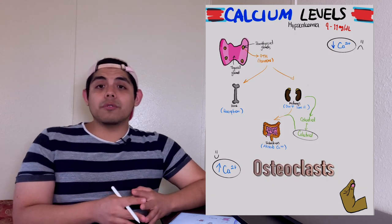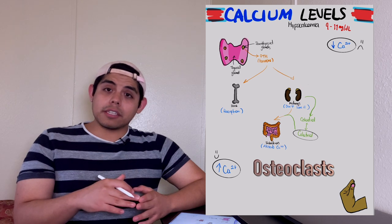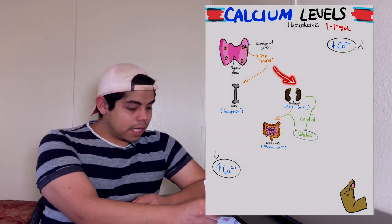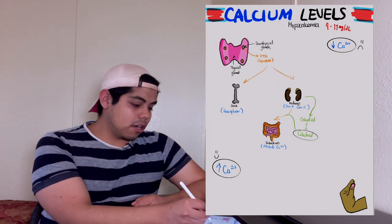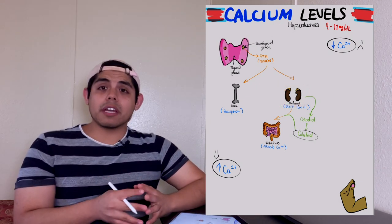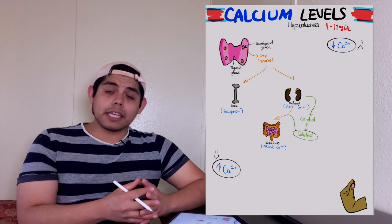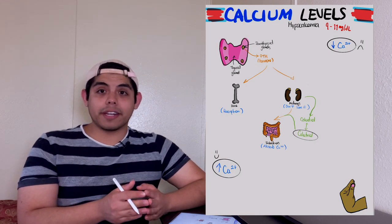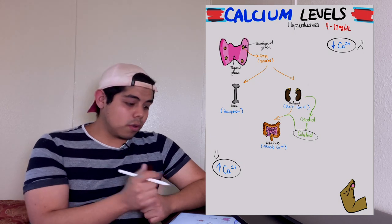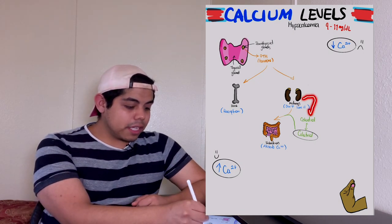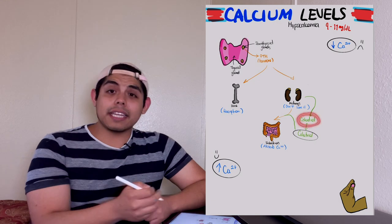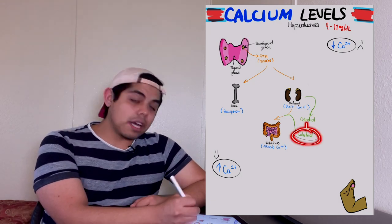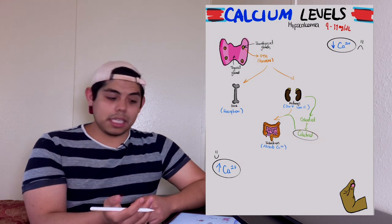Osteoclasts will have the job to take that calcium from the bone and let it out into the blood. The other type of organ that is going to be targeted are the kidneys. After the parathyroid hormone targets the kidneys, the kidneys will stop losing that calcium in the urine. Something important to know is the kidneys will release calcidiol, and then this calcidiol will be converted into calcitriol, which is activated vitamin D.